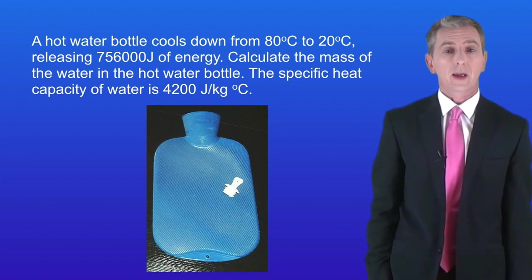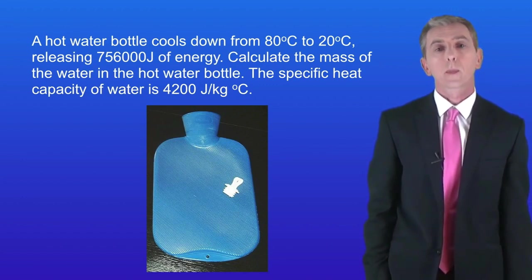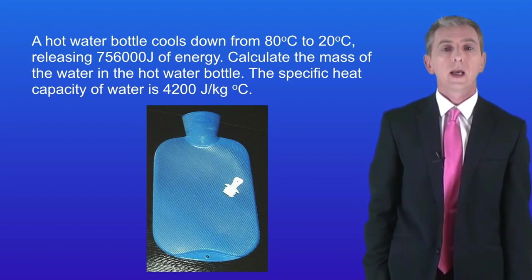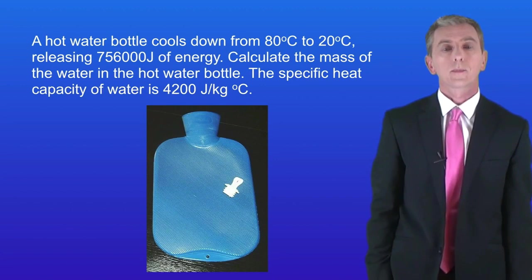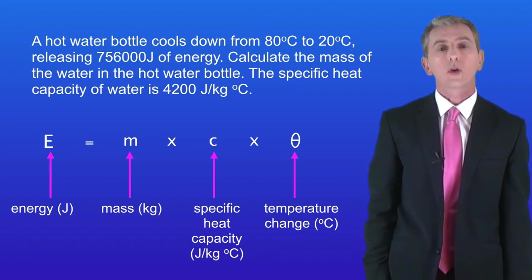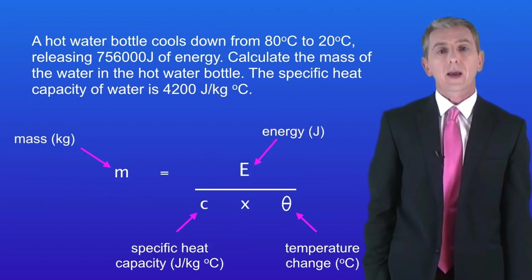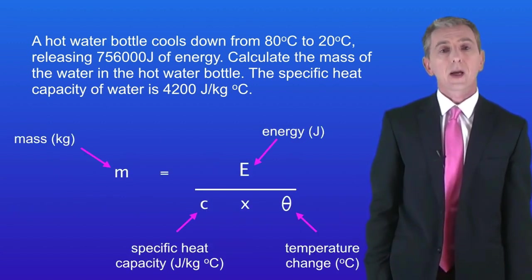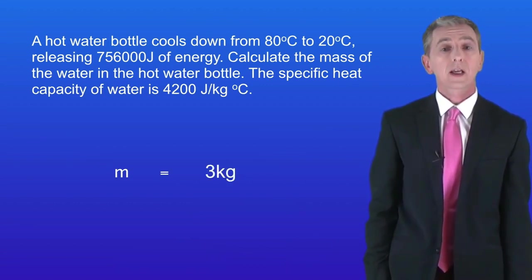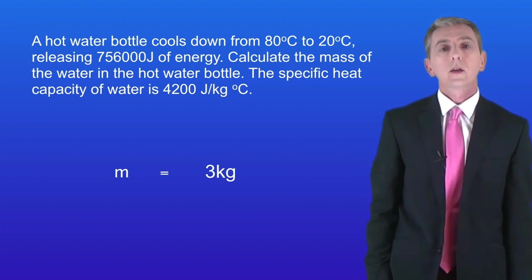Here's a final higher level question which is a bit trickier. A hot water bottle cools down from 80 degrees Celsius to 20 degrees Celsius, releasing 756,000 joules of energy. Calculate the mass of the water in the hot water bottle. This time we're given the energy and asked to calculate the mass, so we need to rearrange the equation. The mass is given by the energy divided by the specific heat capacity multiplied by the temperature change. Putting our numbers into the equation gives us a mass of 3 kilograms for the water in the hot water bottle. Don't be surprised if you get a question like this in the higher level exam.